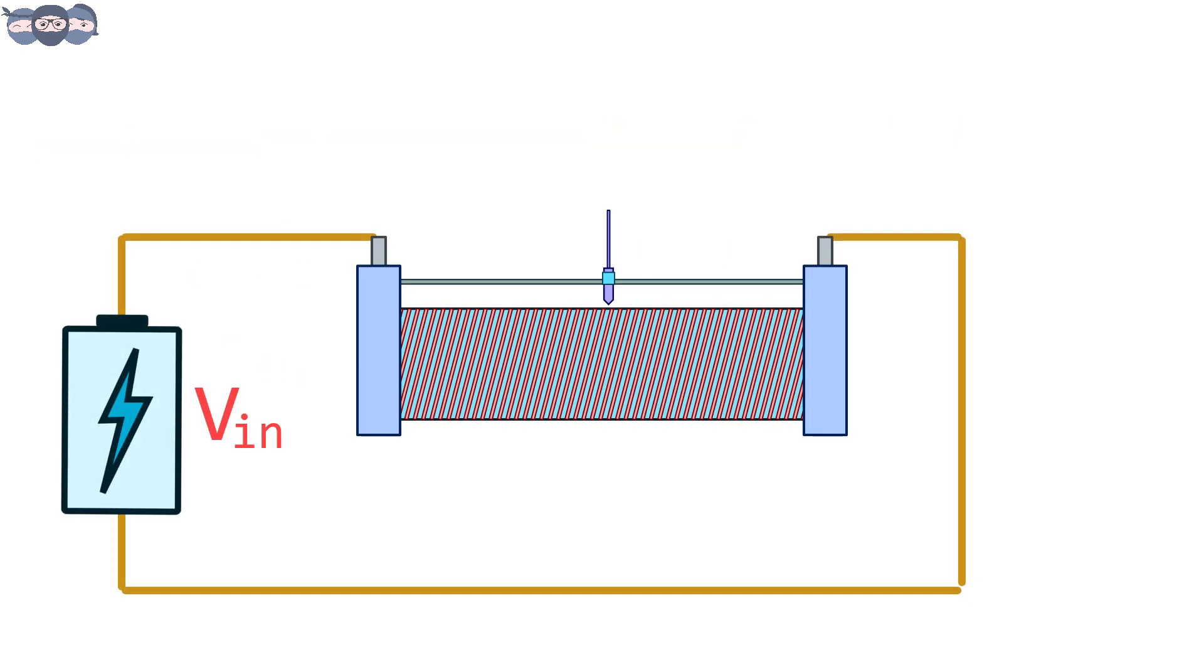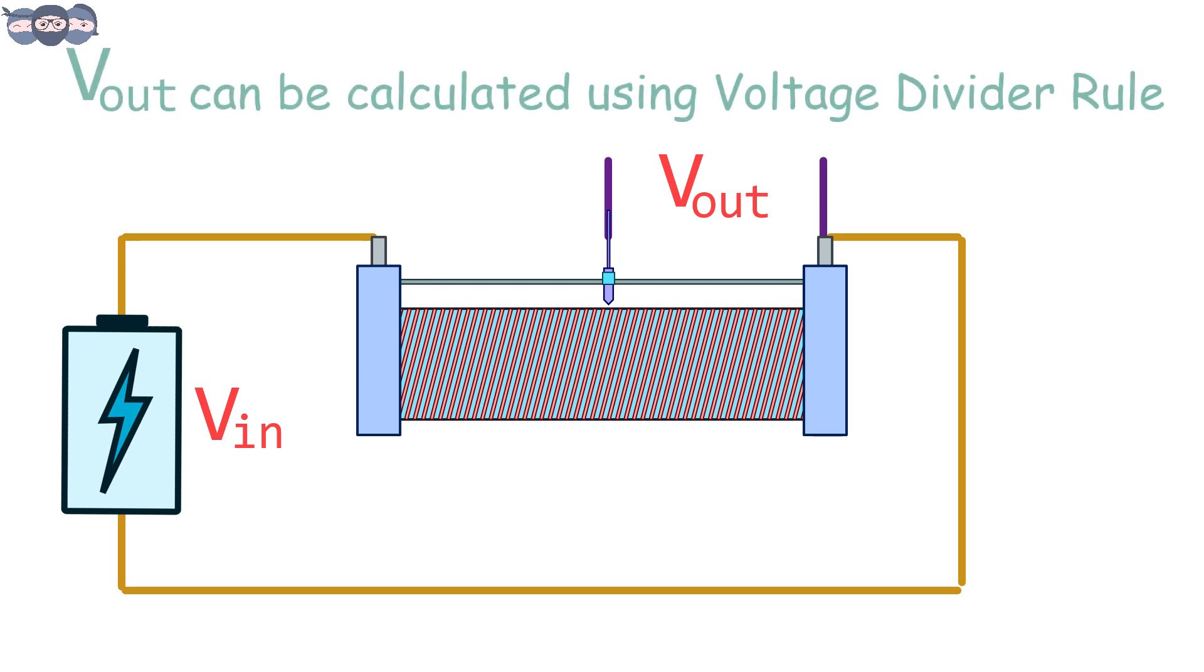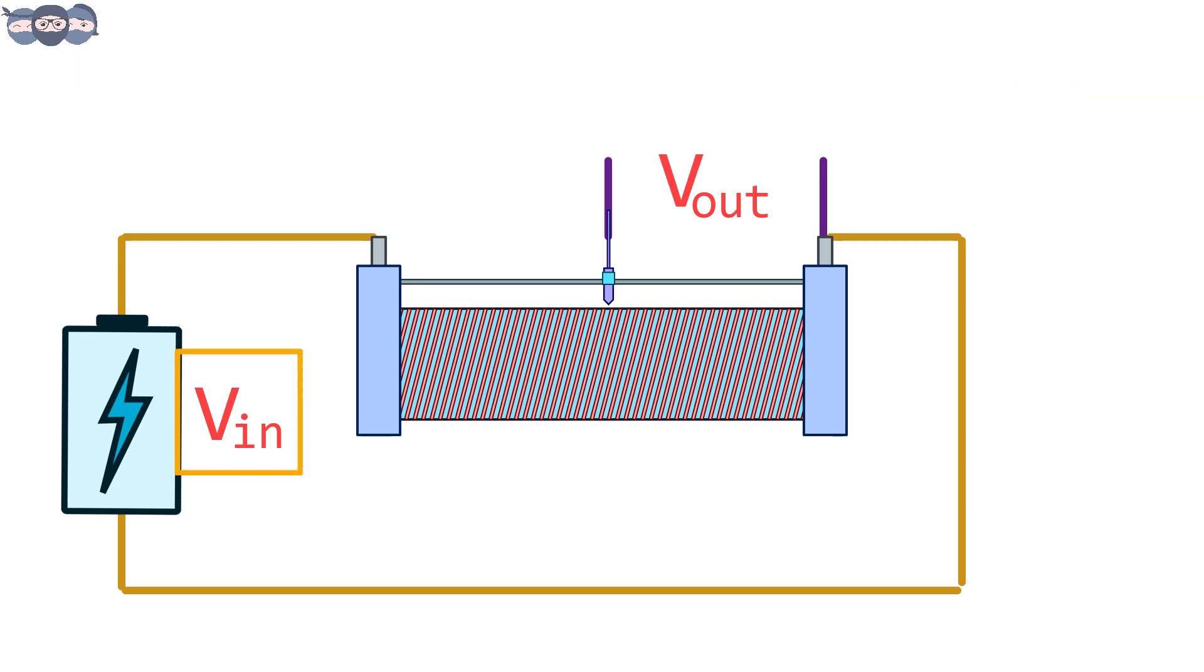When a fixed voltage is applied across the end terminals of the potentiometer, a proportional voltage is generated across the slider. The voltage generated can be calculated using voltage divider rule. Suppose the applied input voltage is Vin. Then, the output voltage Vout across the slider and a fixed end is Vin into Rx by R.